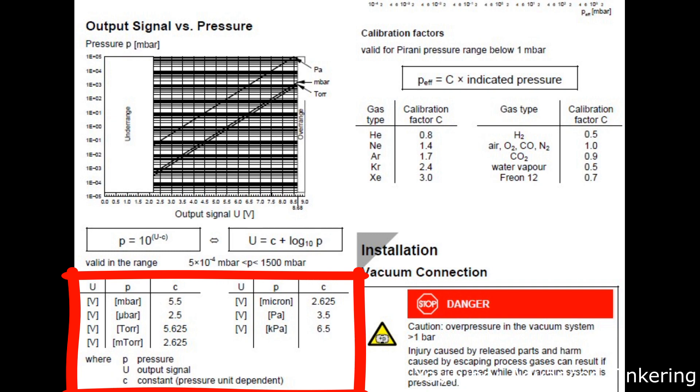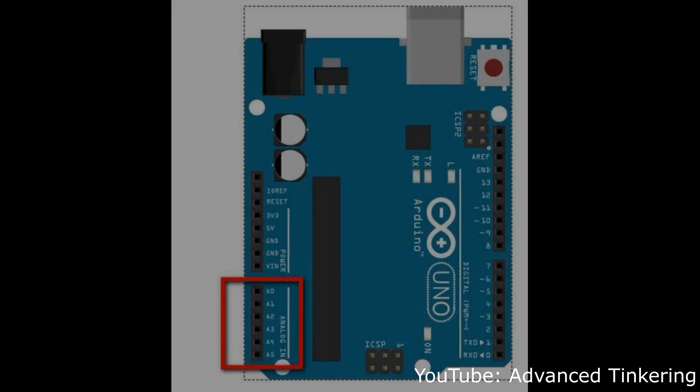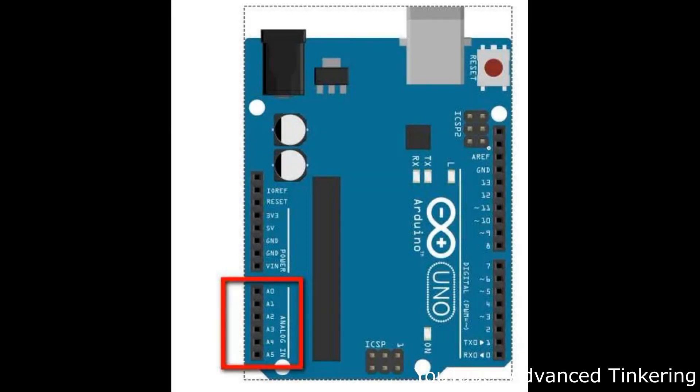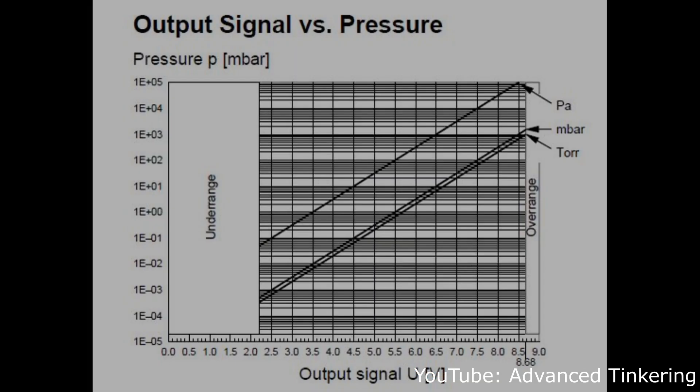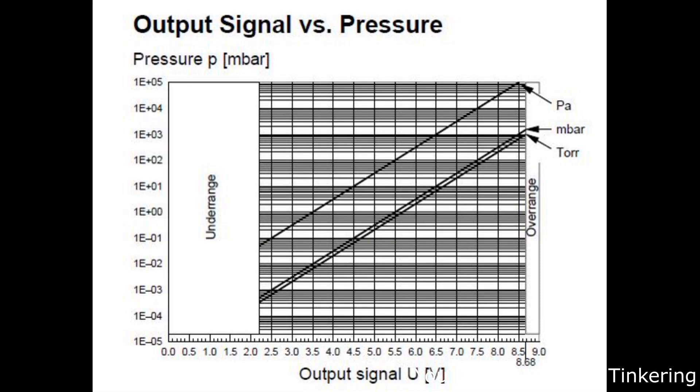To read out the voltage of the sensor and display the pressure, I am using an Arduino. You could simply use the onboard ADC from the Arduino itself, but since the analog digital converter of the Arduino has only 8 bits, the resolution would be pretty low. Normally that wouldn't be a big deal, but because the equation we are using to calculate the pressure is a logarithmic function, even small changes in the voltage will result in a huge change in pressure.